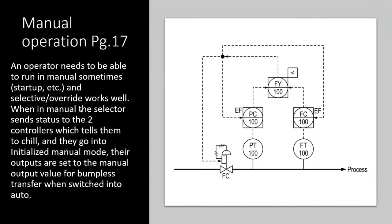When in manual, the selector sends status to both controllers and they will go into initialized manual mode. Their outputs are both set to the manual output value — whatever the operator puts in — for a bumpless transfer when switched into auto. Whatever the output of the controller is based on the operator's manual output value is also sent to both controllers. They can both be in manual, controlling the measured variable and the controller output in order to compute the error.